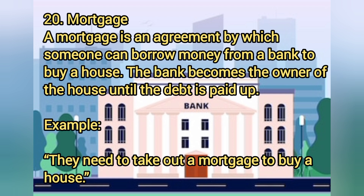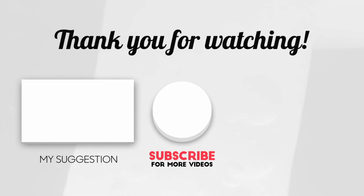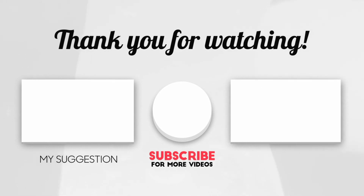Twenty: mortgage. A mortgage is an agreement by which someone can borrow money from a bank to buy a house. The bank becomes the owner of the house until the debt is paid up. Example: they need to take out a mortgage to buy a house. Thanks for watching — if you like this video, make sure to subscribe for more.